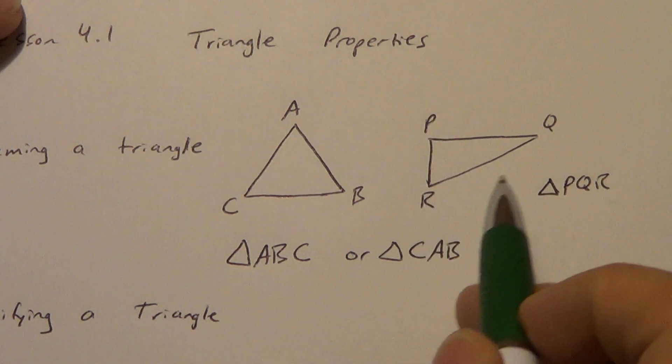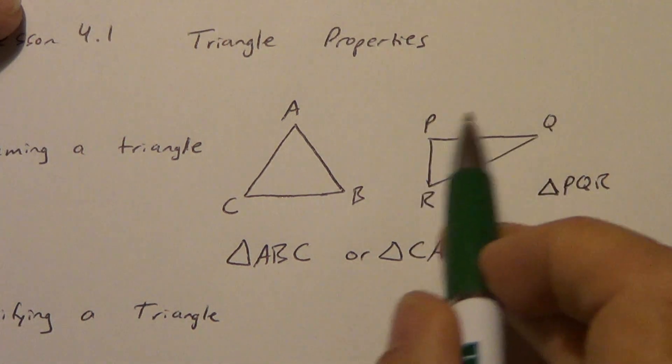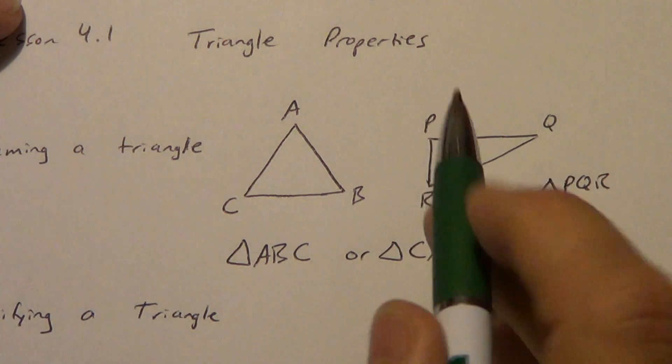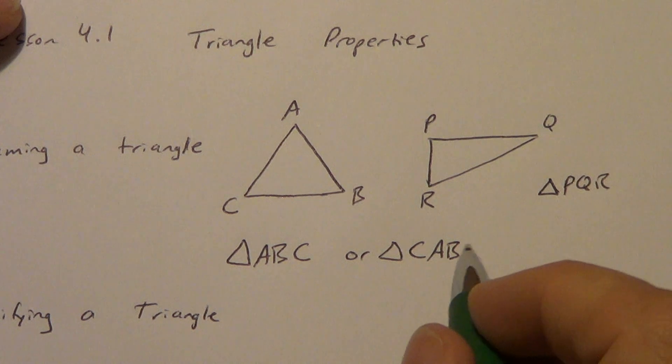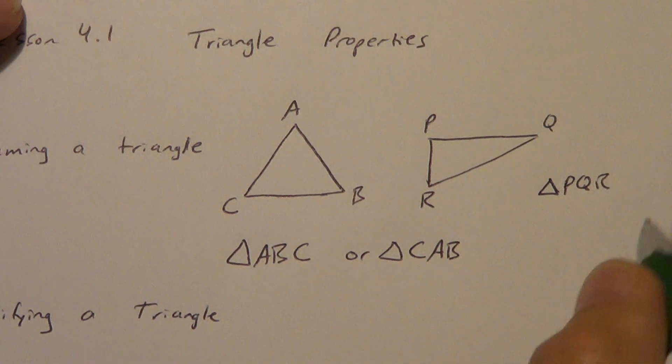The order doesn't really matter. You can go PQR this way. You can work backwards this way. You could start here and work backwards. Start here and work forward. It really doesn't matter. As long as you do all three letters, you're fine. Okay, so it's naming a triangle.